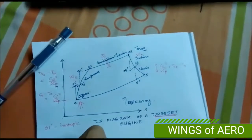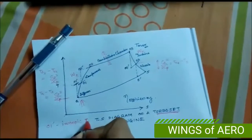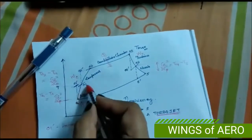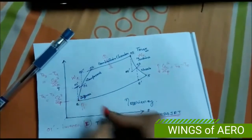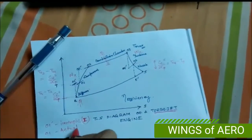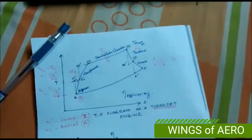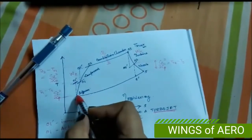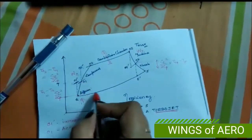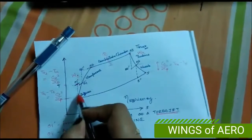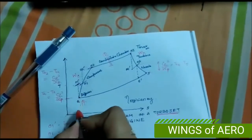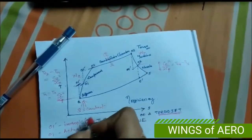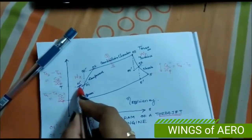Both 'ideal' and 'isentropic' start with the letter I — that's a way to remember them. The thick line going from point A to 0-1 is the actual condition. In the actual process, there is an increase in temperature with respect to entropy, whereas in the isentropic condition, S is constant and temperature gradually increases.